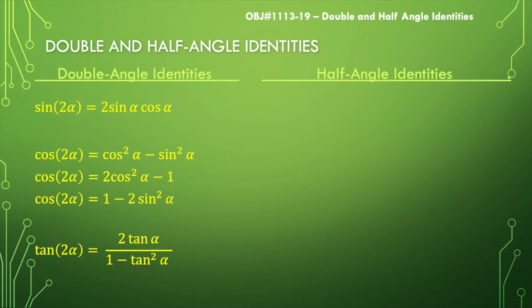Now your half angle identities, they get derived from the double angle identities. So if I'm thinking about solving for sine squared of a here, I could subtract a one from the other side and then divide through by a negative two, and you'd end up with this identity right here.